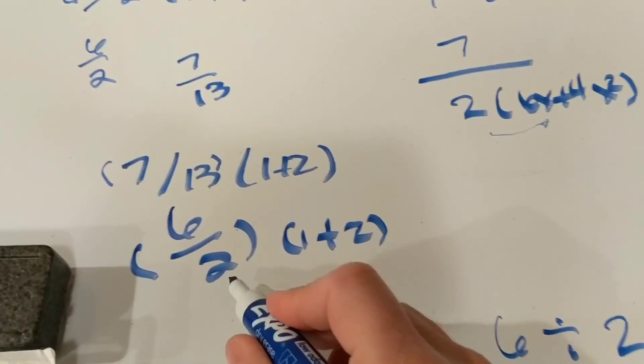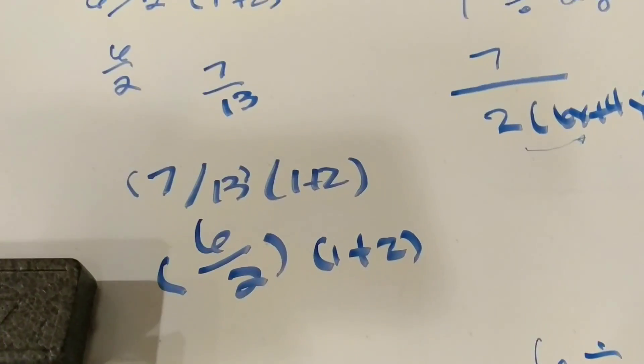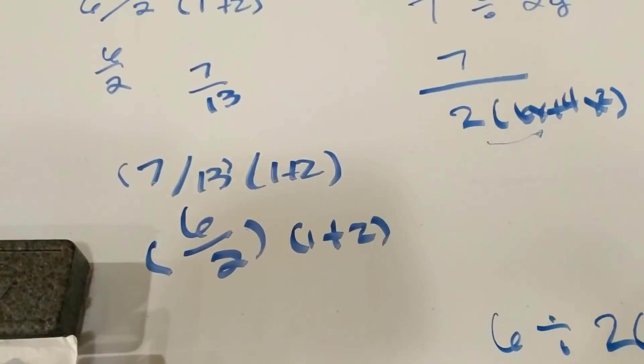Well, the reason it adds the parentheses is because it thought you wanted the fraction 6 over 2. However,